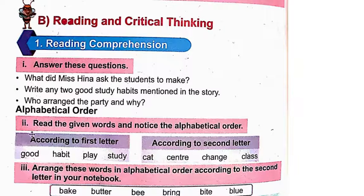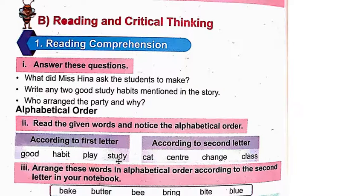Alphabetical Order. Read the given words and notice the alphabetical order. According to the first letter: Good, Habit, Play, Study. The first letters of these words are G, H, P, S — they are all in alphabetical order.